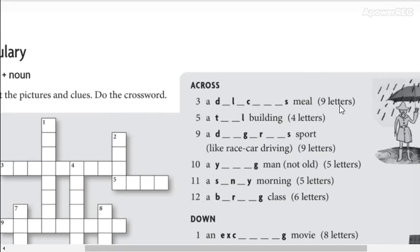A cuántas letras tiene esta palabra? Por ejemplo, across: una comida - que será delicious. Tall building, dangerous sport. So you complete this.